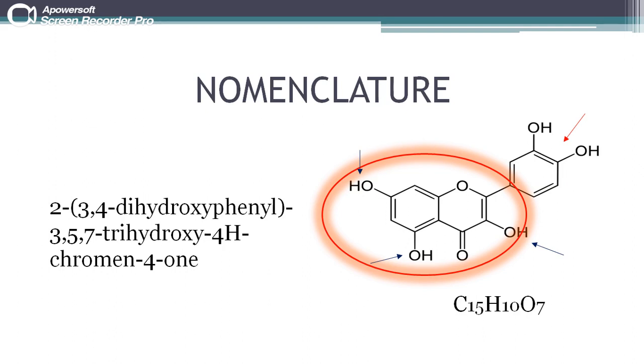As in the name, 2-(3,4-dihydroxyphenyl) is for the side chain of the parent compound at position 2, that is adjacent to the oxygen, with the side chain having 2 OH groups on the benzene ring at positions 3 and 4, shown by the red arrow.